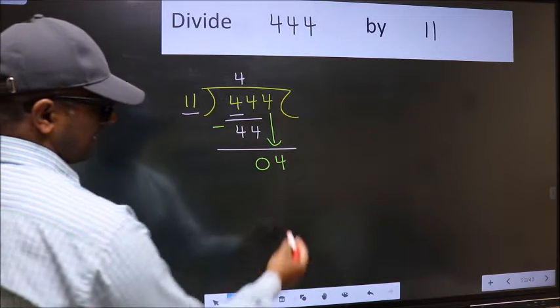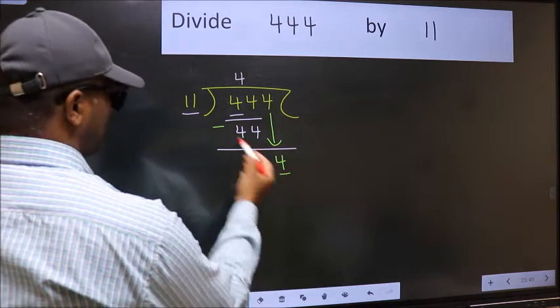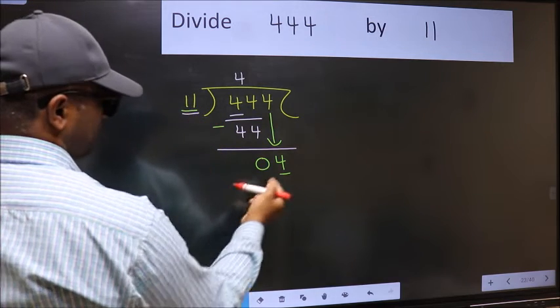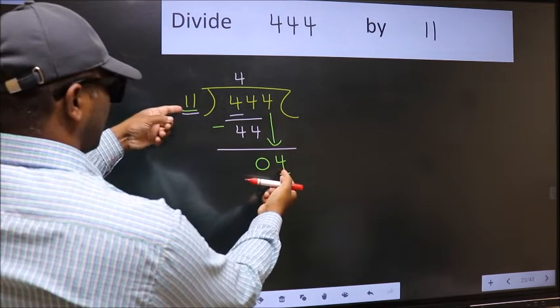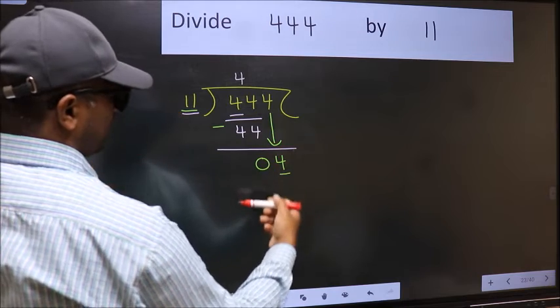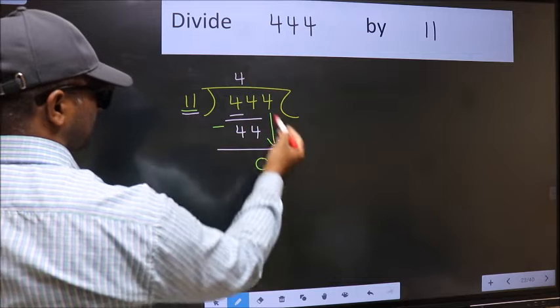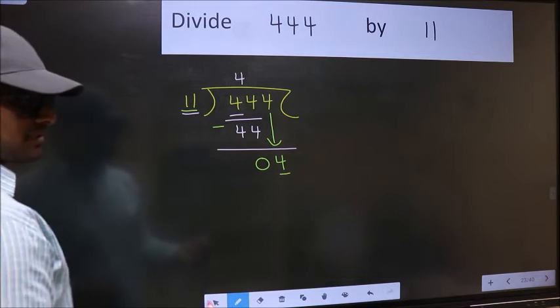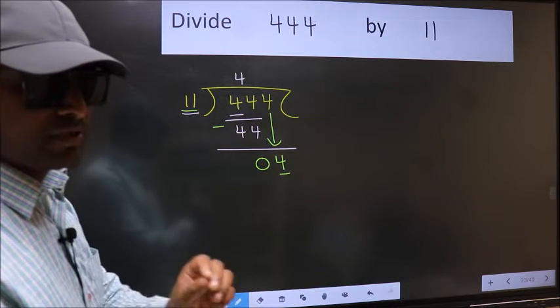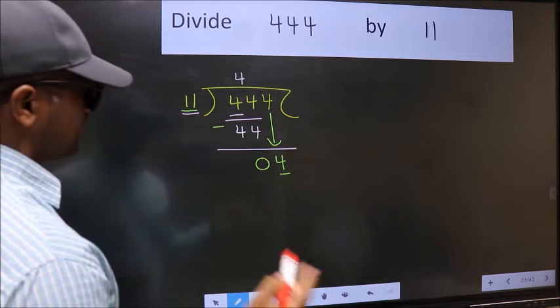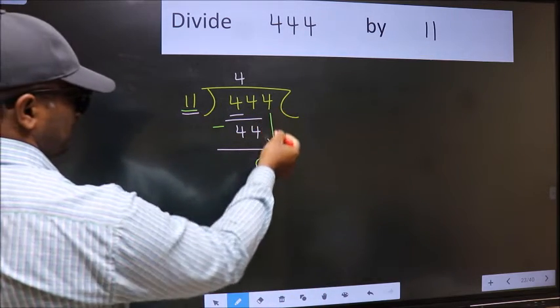Here we have 4 and here 11. 4 is smaller than 11, so what many do is they directly put dot and take 0, which is wrong. Why is it wrong? Because just now you brought this number down.